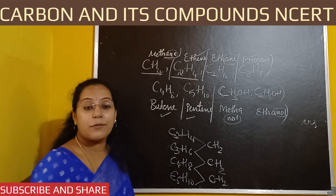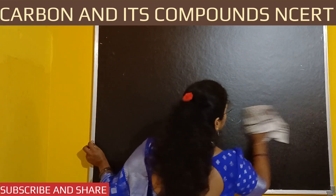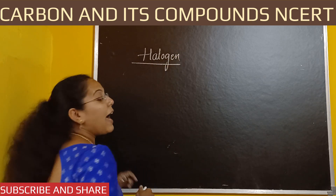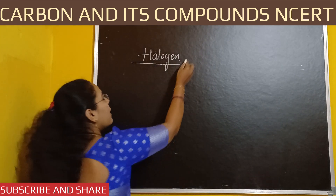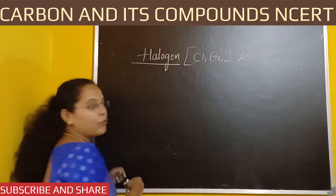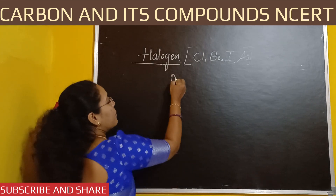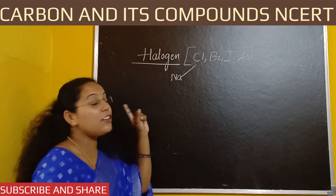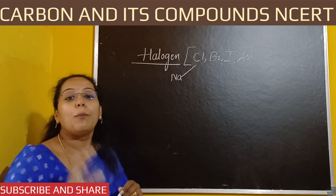Now let us move to the next important concept — halogens. Halogens are the elements which belong to the 17th group. Some of the elements are chlorine, bromine, iodine, and astatine. When these elements combine with metals, they form salts — for example, sodium chloride, sodium bromide, sodium iodide, and magnesium chloride. Basically, halogens are a group that forms salts.